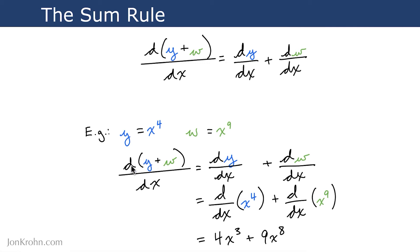So the derivative of x to the power of four plus x to the power of nine is four x cubed plus nine x to the power of eight.